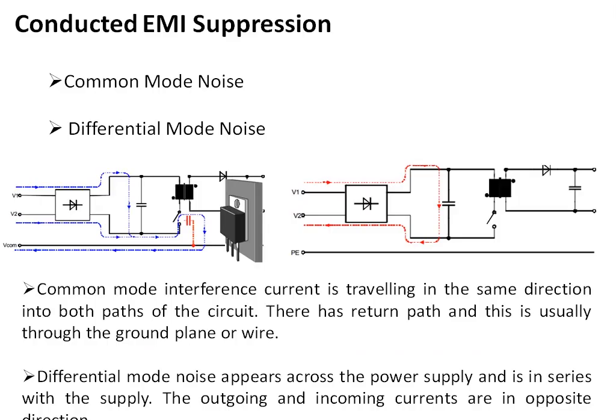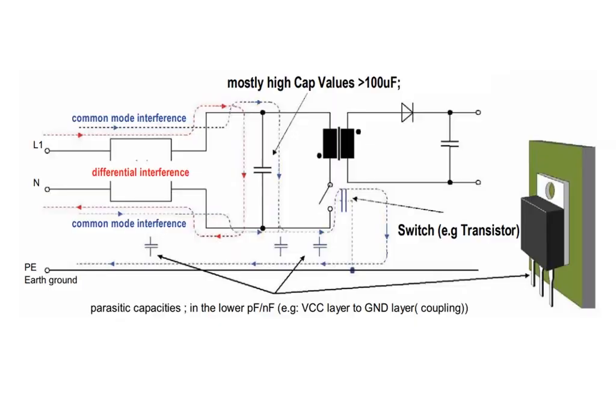Now I will discuss conducted EMI suppression filters. There are two types of noise generated in conductors: common mode noise and differential mode noise. As seen in the left side figure, common mode noise is generated because of stray capacitance — the current is common in both conductors and flows in the same direction toward ground. Differential mode noise, shown in the right side figure, flows in opposite directions in the two conductors. Differential mode noise generally occurs at low frequency and can be eliminated using a capacitor across the line. For eliminating common mode noise, we use a bifilar common mode choke.